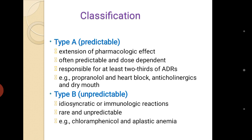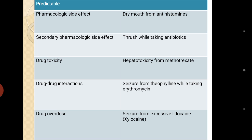Coming to the classification, there are two major types: Type A and Type B. Type A is predictable — it is an extension of pharmacological effect, dose dependent, and responsible for at least two-thirds of adverse drug reactions. Example: propranolol causes heart block; anticholinergics cause dryness of mouth. Type B is unpredictable — idiosyncratic or immunological, seen only in genetically susceptible patients. Example: chloramphenicol causes aplastic anemia, involving bone marrow suppression.